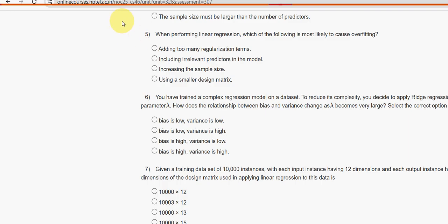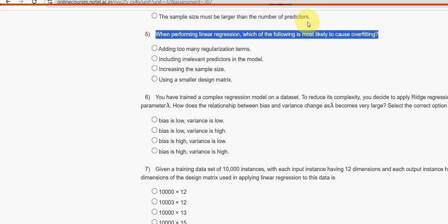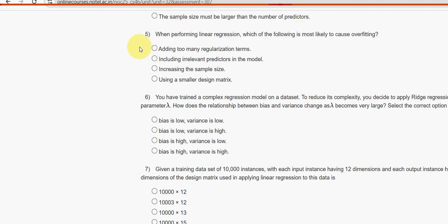Fifth question: When performing linear regression, which of the following is most likely to cause overfitting? For the fifth question, the second option is the probable solution.